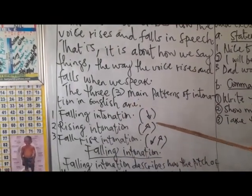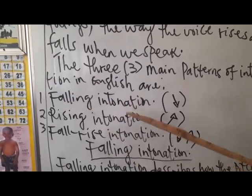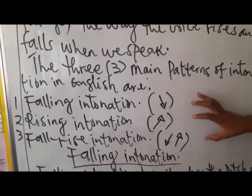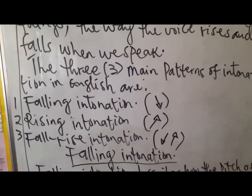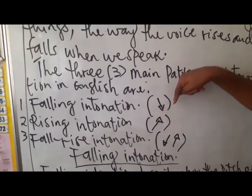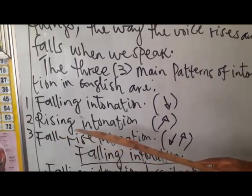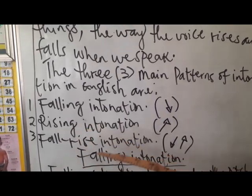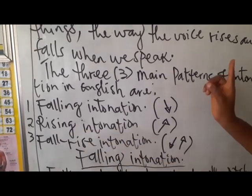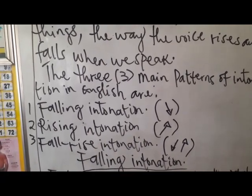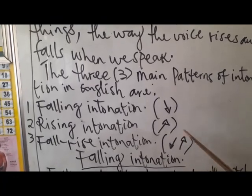The three main patterns of intonation in English are: one, falling intonation — you can see the arrow pointing down; two, rising intonation — the arrow is facing up, meaning your voice or pitch is high when you are talking; and three, rise-and-fall intonation.